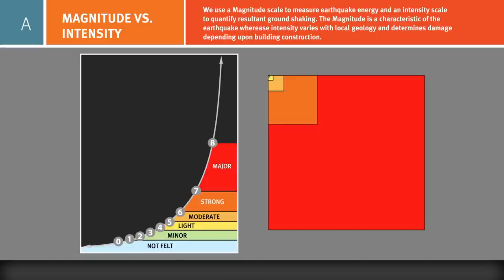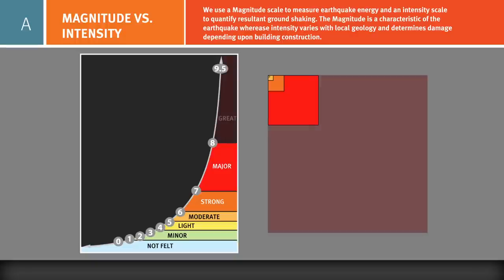In terms of energy, the increase is even greater, with each step in magnitude having approximately 32 times the energy of the previous. For instance, a magnitude 6 releases about 32 times the energy of a magnitude 5, and a magnitude 8 releases around 32,000 times the energy of a magnitude 5. There is no upper limit on magnitude. However, the largest recorded earthquake in history was a magnitude 9.5. Earthquake magnitude does not vary from place to place, but is a characteristic of the total energy released by a particular earthquake.